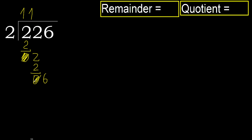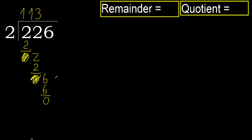Bring down 0. We have 6. 2 multiplied by 3 is 6, it is not greater. Subtract: 0. Next, there is no number remaining, therefore we finish.